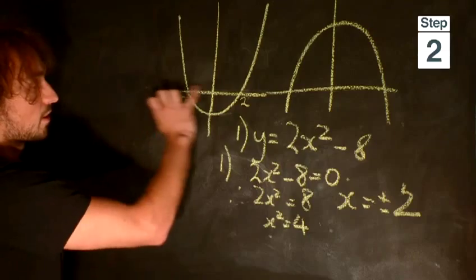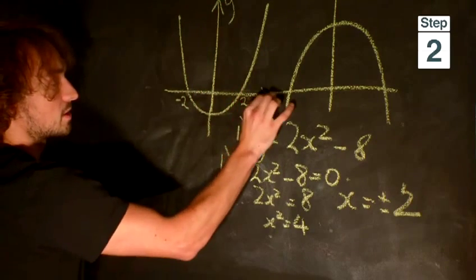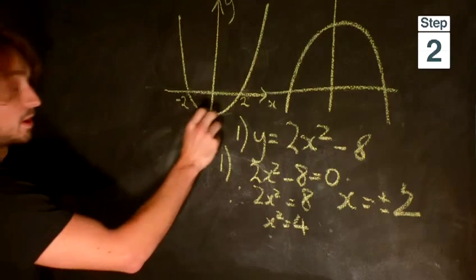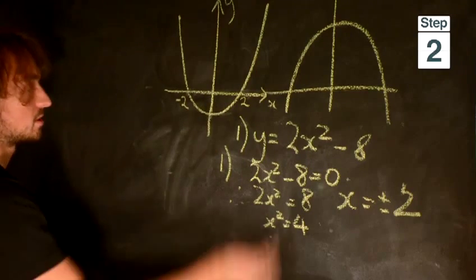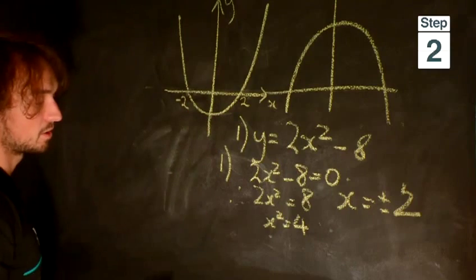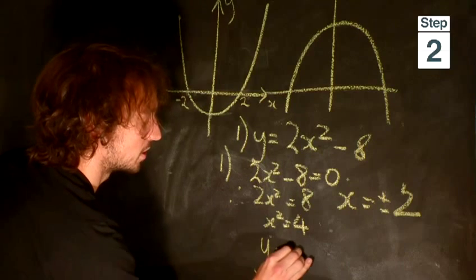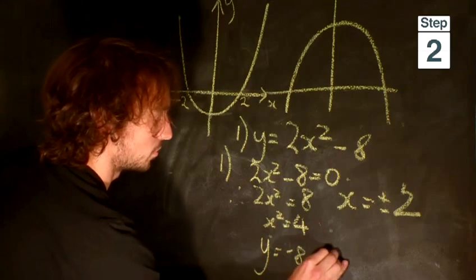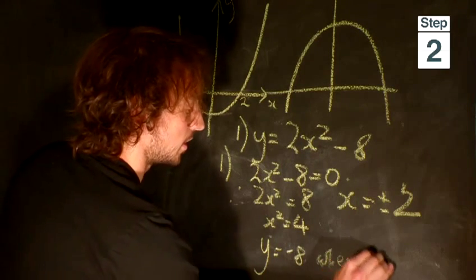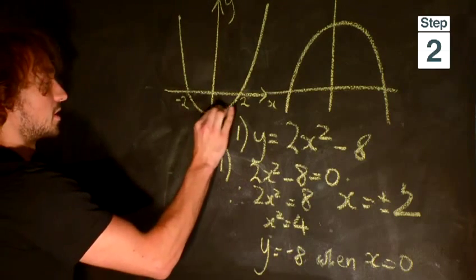So after we've figured out where it crosses the x-axis, we now need to figure out where it crosses the y-axis. So this would be this point here. To do this, this time we set x equal to 0. So when x equals 0, y is equal to minus 8. So this point here is minus 8.